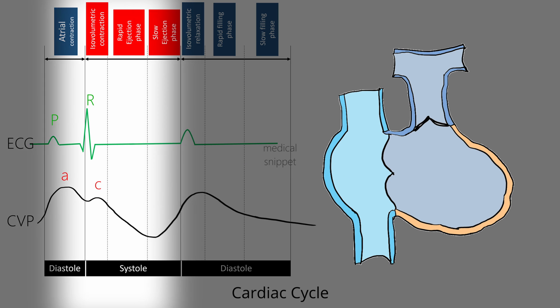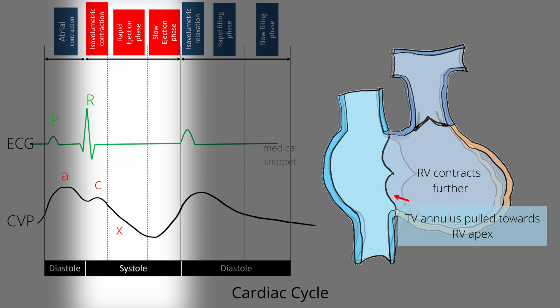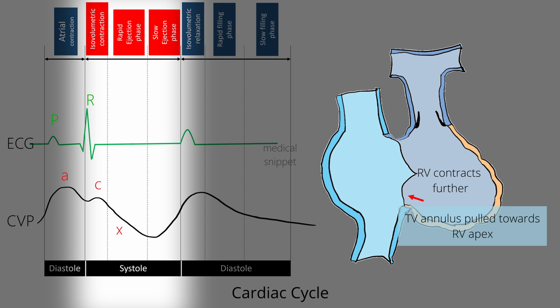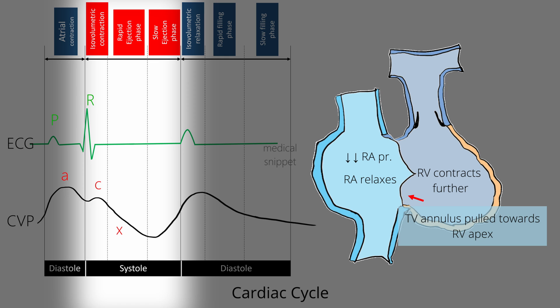Following the C wave is the first descent in the CVP tracing, called the X descent. As the ventricle continues to contract, it descends and pulls the tricuspid valve towards the right ventricular apex, causing the pressure in the right atrium to fall. At the same time, the right atrial pressure further decreases due to right atrial relaxation. These changes cause the X descent in the CVP pressure tracing. The X descent happens before the T wave on the ECG.